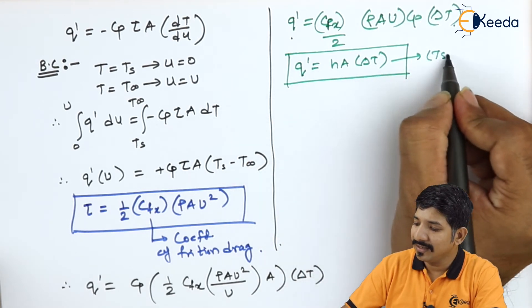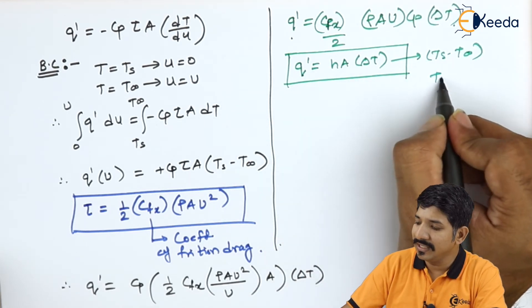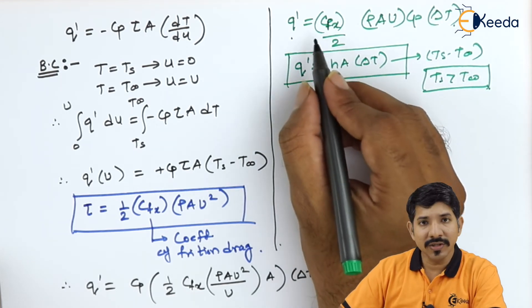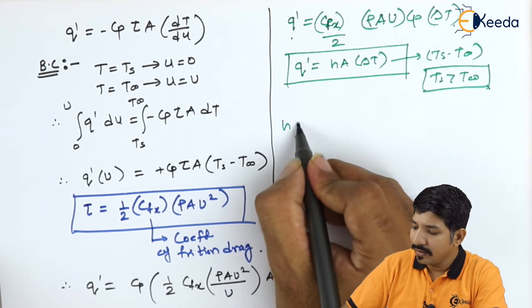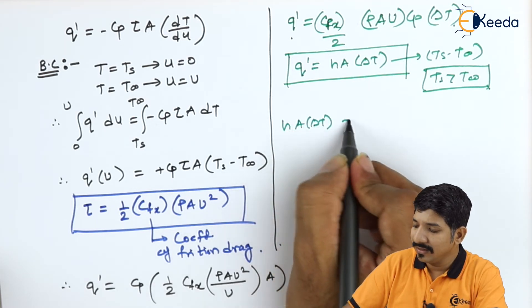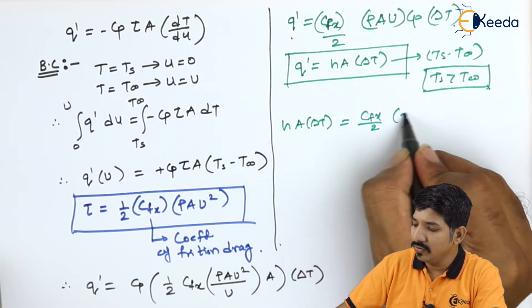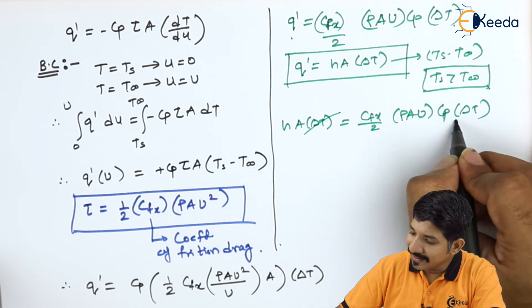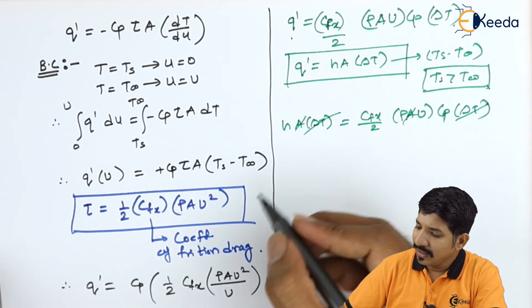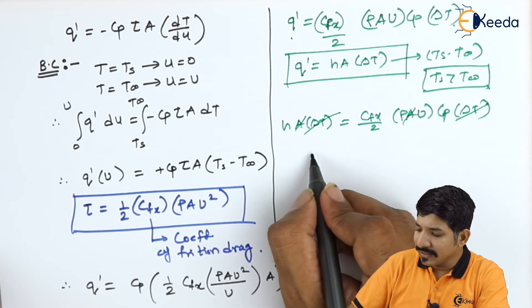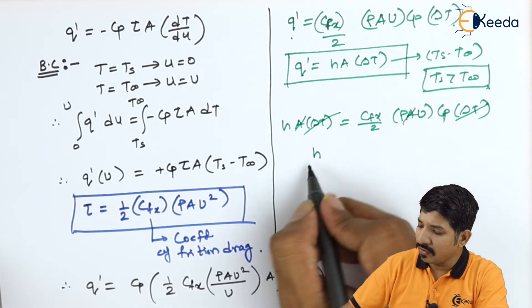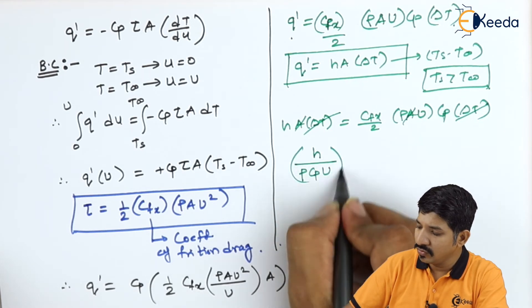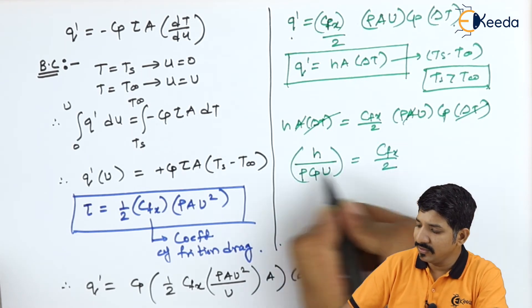So here my delta T is again Ts minus T infinity if Ts is greater than T infinity. So if I substitute the same over here what do we have? HA delta T is equal to Cfx by 2 rho a u Cp into delta T. I can cancel this delta T and the area and again with certain rearrangement I can write the equation as H upon rho Cp into U which is equal to Cfx by 2.